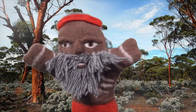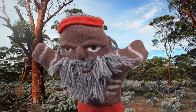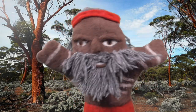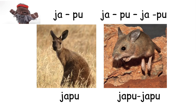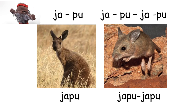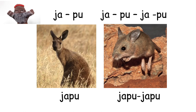Let's have a look at some examples of reduplicated nouns from the Djuban language. Djubu means small, and Djubu Djubu means really tiny.